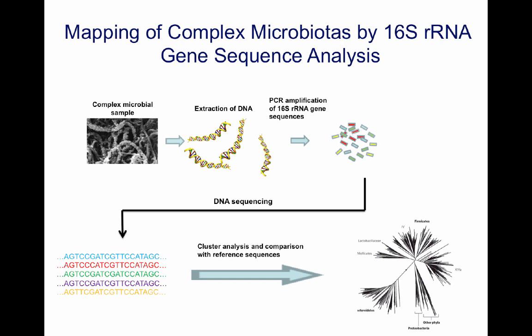This technique takes advantage of the fact that all living organisms have genes that encode for ribosomal RNA. In bacteria, we find the so-called 16S ribosomal RNA genes. If you take a complex microbial sample from, for example, the gastrointestinal tract, you can extract DNA from all the bacteria in the sample, and by designing primers you can, by PCR, amplify specifically all the 16S rRNA gene sequences.